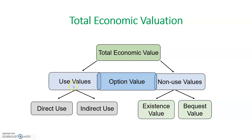Use values include direct use values and indirect use values. On the other side there are non-use values, which include existence value and bequest values. In between the use values and non-use values sits option value. Sometimes we may not use a resource in the present but we value that resource because we may use it in the future.